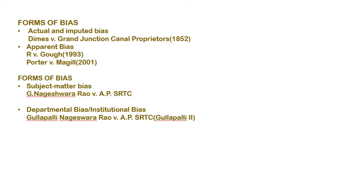In the case of subject matter bias, there are cases where the deciding officer is directly involved in the subject matter of the case. Involvement in administrative action does not amount to bias unless there is a real likelihood of bias. The case of G. Nageshwara Rao versus APSRTC is relevant here. The Supreme Court quashed the government's decision to nationalize road transport on the ground that the secretary of the transport department was interested in the subject matter of the case.